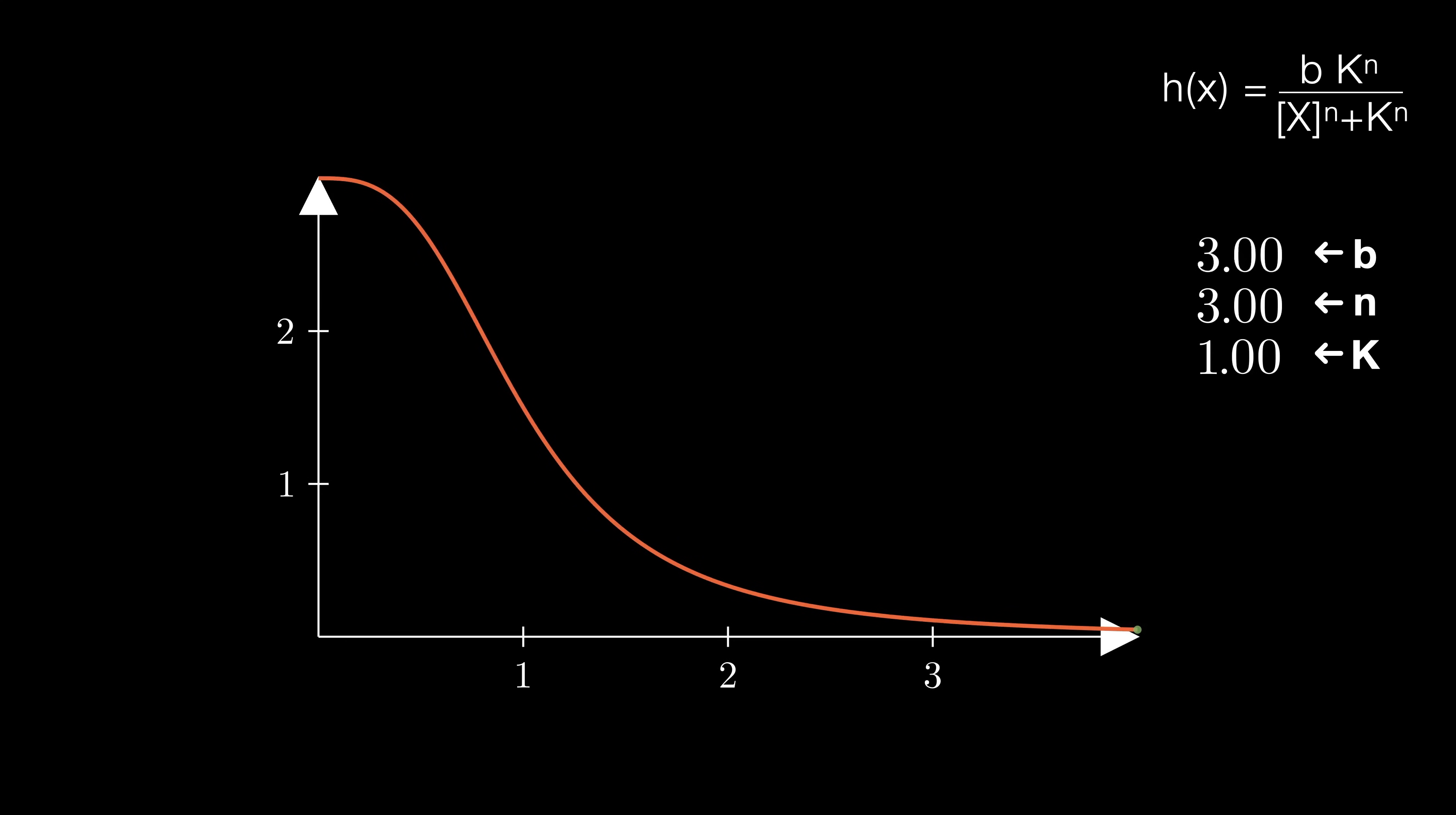As you can see, if we increase the amount of protein X, the rate of production becomes less and less. Changing B will change the max rate of production. Increasing N makes the whole function look more step-like, and K moves around the center of the function. So for simplicity's sake, let's make N equals 1.